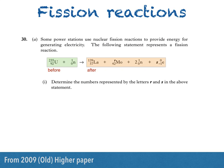We're then asked to determine the numbers represented by the letters R and S in the above statement. To calculate R, we need to know that the total of the mass numbers before the reaction is equal to the total of the mass numbers after the reaction.